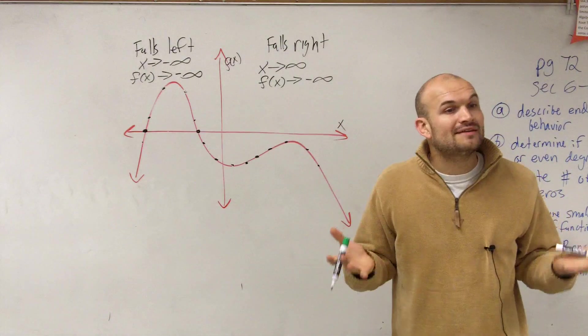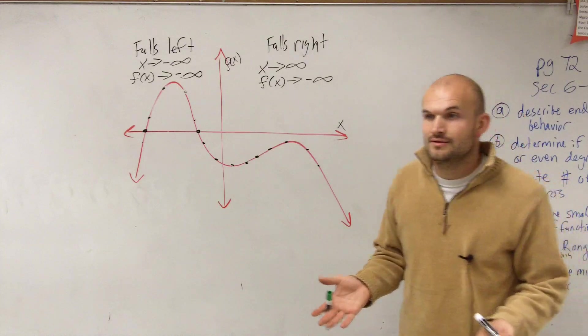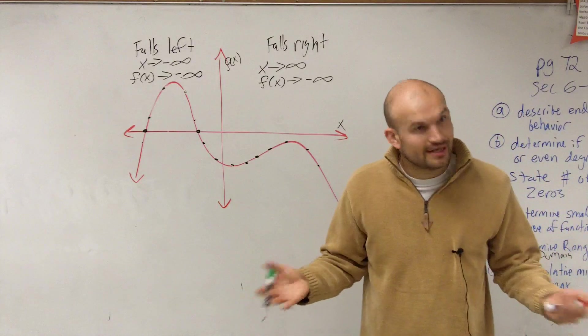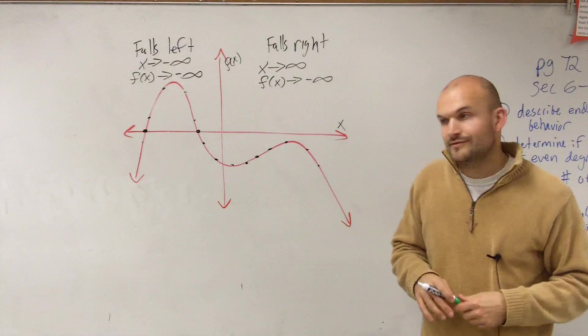So what we talked about last class period is when you have an even number of zeros, that told you you're going to have an even degree of a polynomial. Or if you had no zeros at all, then you could have also an even one as well.